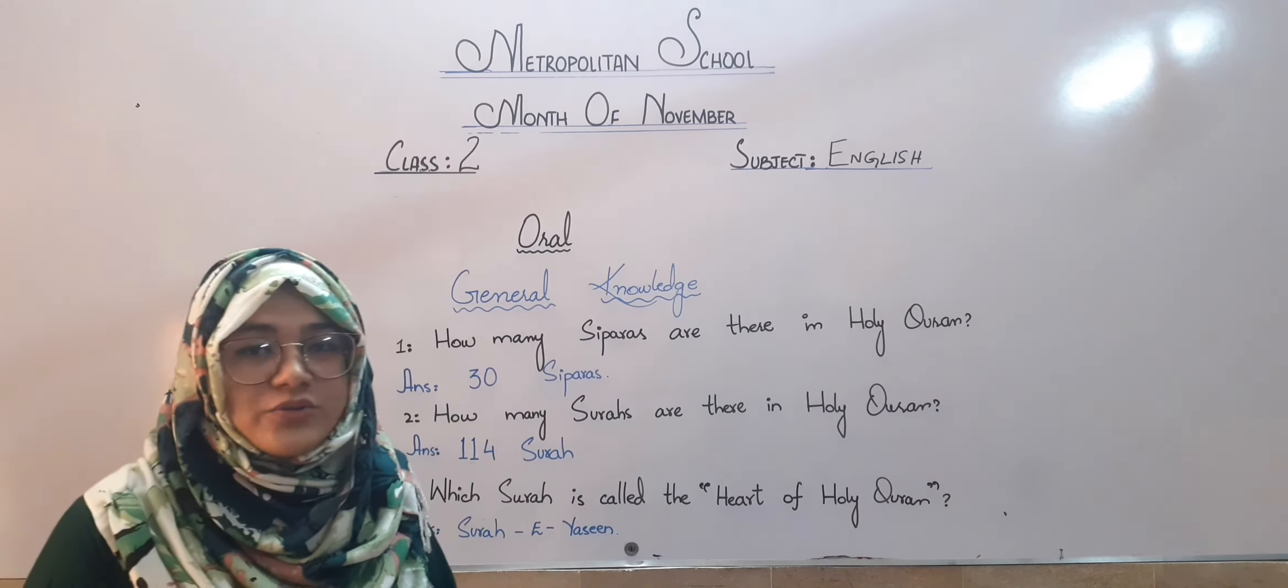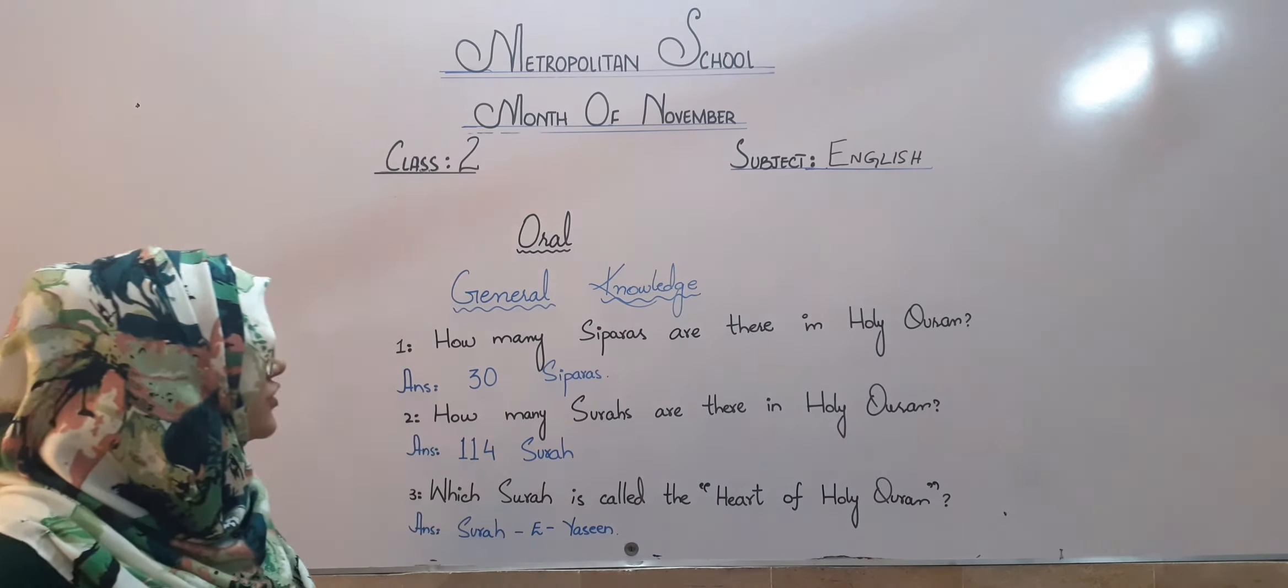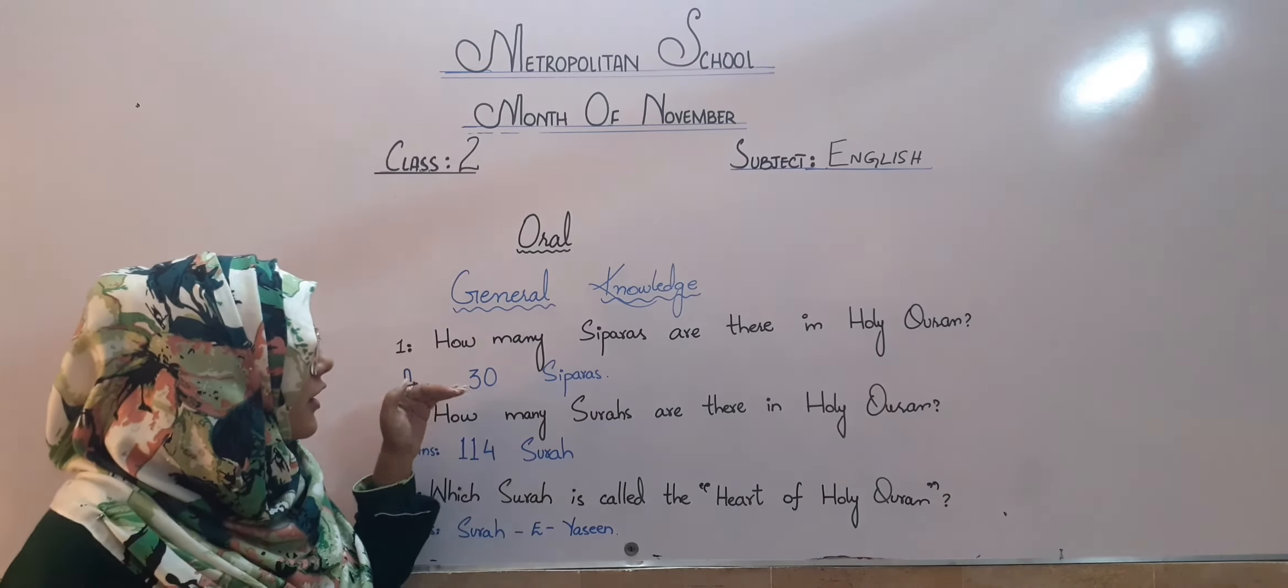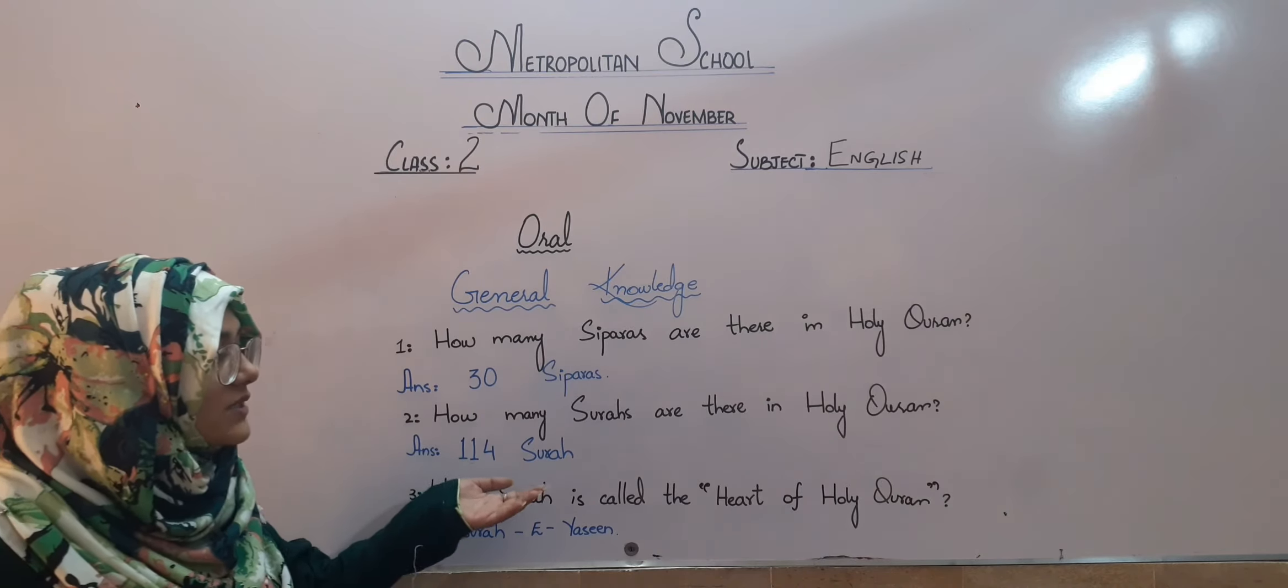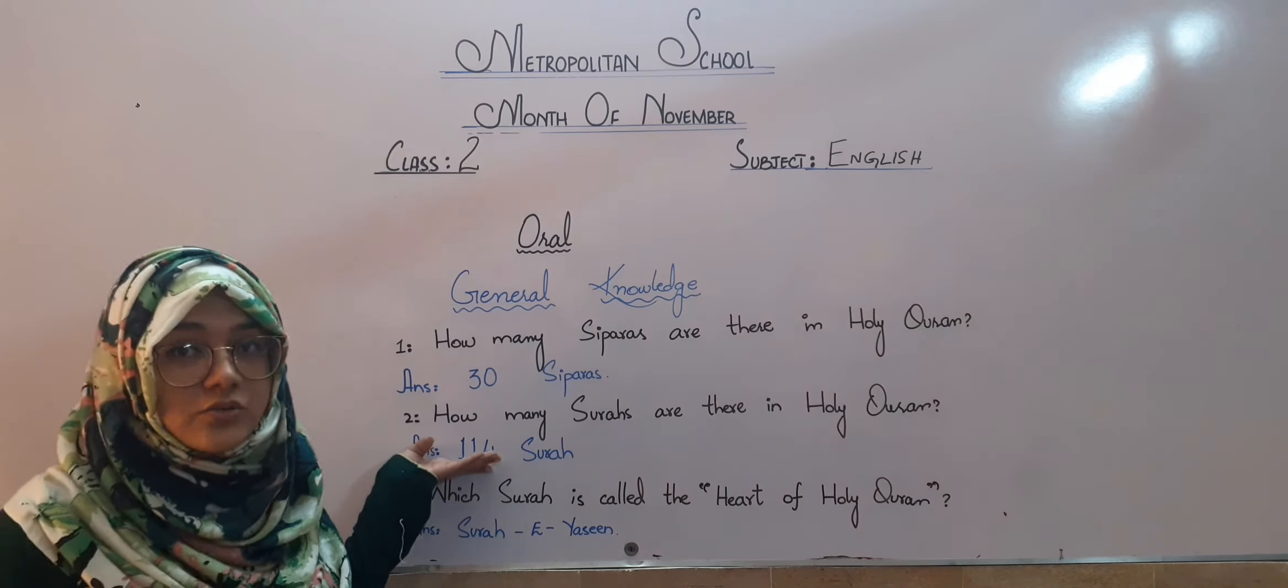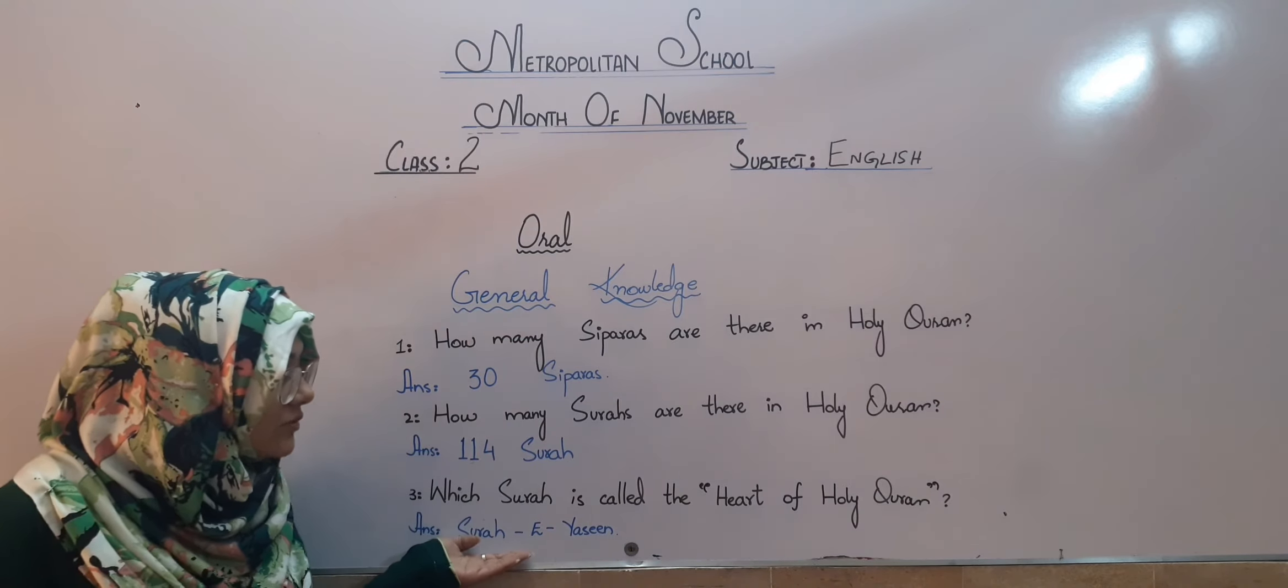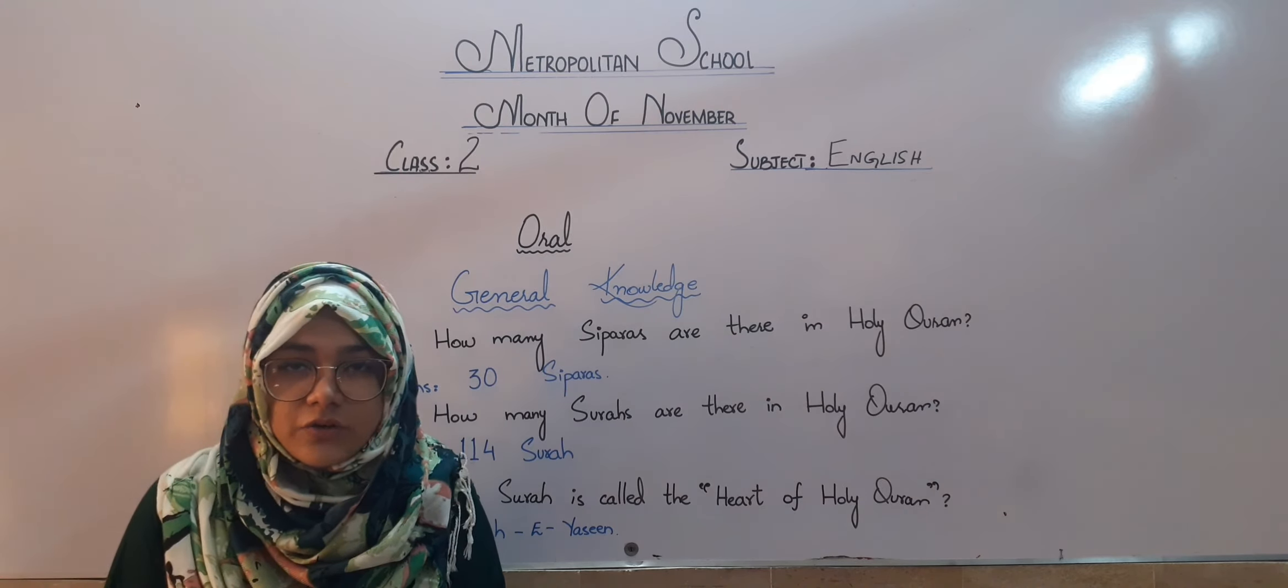Okay students, now we are about to do the last part of our lesson which is the oral of general knowledge. So, the very first question is how many separas are there in holy quran? There are 30 separas. So, answer will be there are 30 separas in holy quran. Second one is how many suras are there in holy quran? And there are 114 suras in our holy quran. Last question is which sura is called the heart of holy quran? And the answer is surai yaseen my dear students. Surai yaseen is called the heart of holy quran.